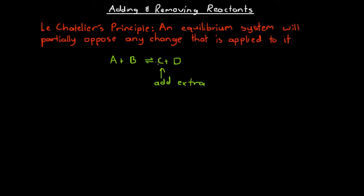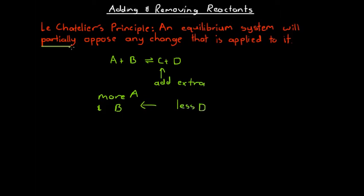If the system is getting rid of some of that extra C, it's going to undergo a net back reaction. So we add extra substance C, and Le Chatelier's Principle tells us the equilibrium system will use up some of that extra C by allowing a net backwards reaction to occur. This means more A and B are produced, and D is also used up, so there will be less substance D. However, this is where the word 'partially' comes in — the system will only partially oppose this change.